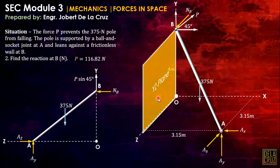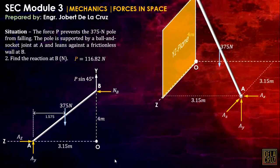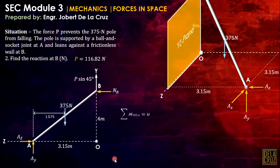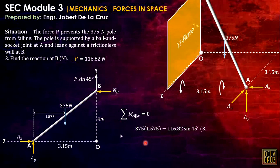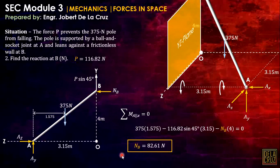We can solve NB by summing moments about A again. The distances: half of 3.15 is 1.575. Summing moments about A: 375 times 1.575, then P (116.82) sine 45 times moment arm 3.15 creates counterclockwise moment, then NB times 4. Solving, we obtain NB.